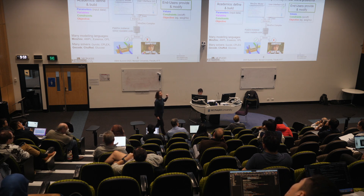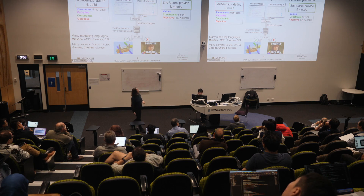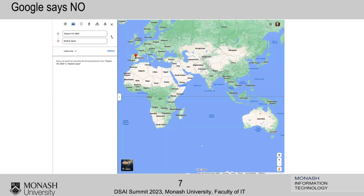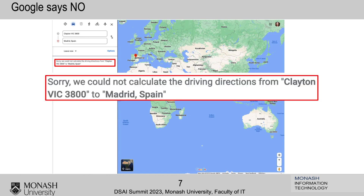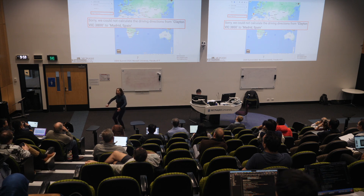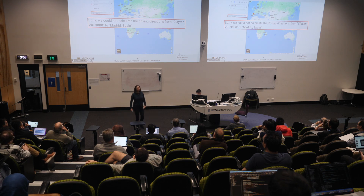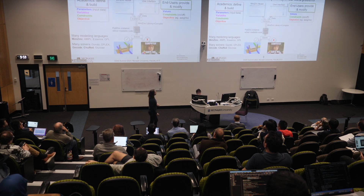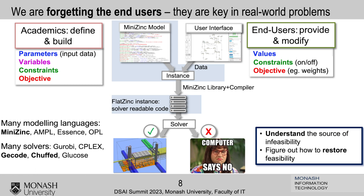When the user gives input and it's combined with the model, my system will often say 'no.' Even if the model is totally correct, there's just no solution because the problem is infeasible. Google Maps does this — it said to me when I asked it to drive from Melbourne to Spain: 'Sorry, we could not calculate the driving directions from Clayton to Spain.' It's not telling me why (because there's no land connecting), and it's not telling me there's actually a way to solve it — I could go by plane or by boat.